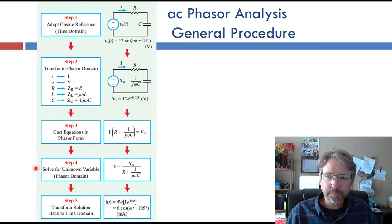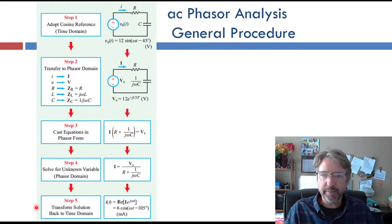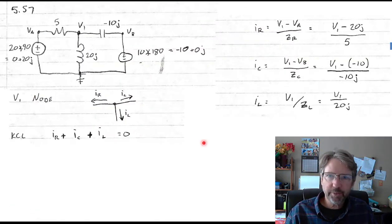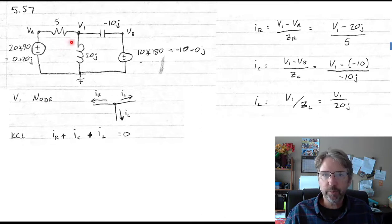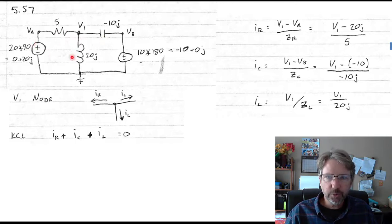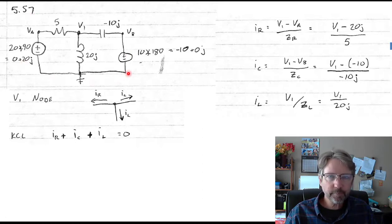Once we find whatever we're after, we have to transform it back into the time domain. Here's the first problem — this is a node analysis problem. We're trying to find V1 in this circuit with a resistor, inductor, and a capacitor. We've got two sources and we've already been transformed into the phasor domain. We put a ground node, then look at all the other nodes. This VA node is known with the voltage source connected to ground.